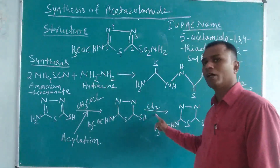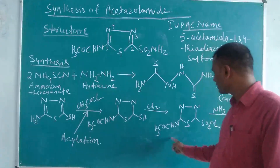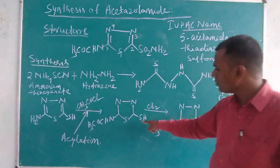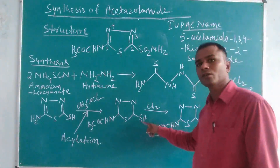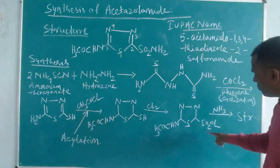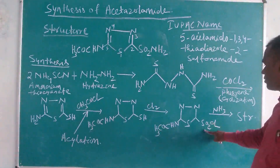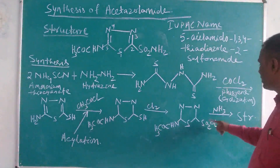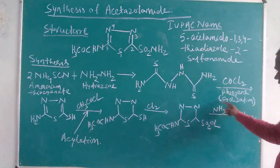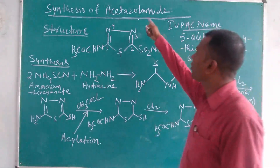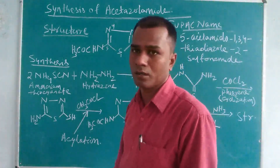When this compound is chlorinated using chlorine, it gives a sulfonyl chloride compound. The mercapto group is converted into a sulfonyl chloride group. When this sulfonyl chloride group is then ammoniated in the presence of ammonia, it gives the final structure of acetazolamide.